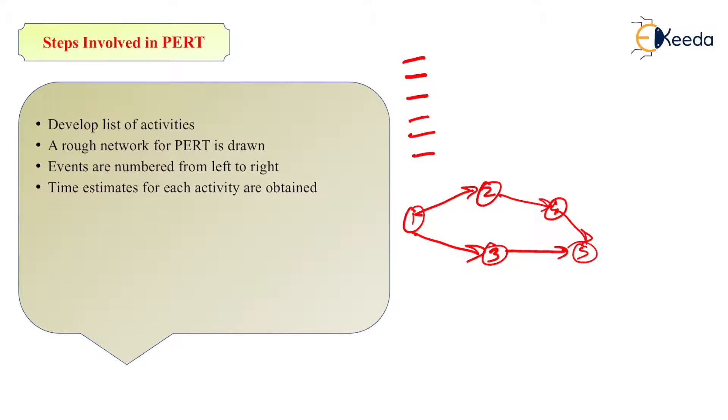After numbering from left to right, next is time estimate for each activity are obtained. Now time estimate. As we know what is TE? The formula is what? We have seen in previous slide, which is TO plus 4 times TM plus TP upon 6. So we have to find out time estimate for each activity. Then you have to find out expected time for each activity by using this equation. Your time estimate will be found out by using the scheduled network. The total time required, we have to find out.